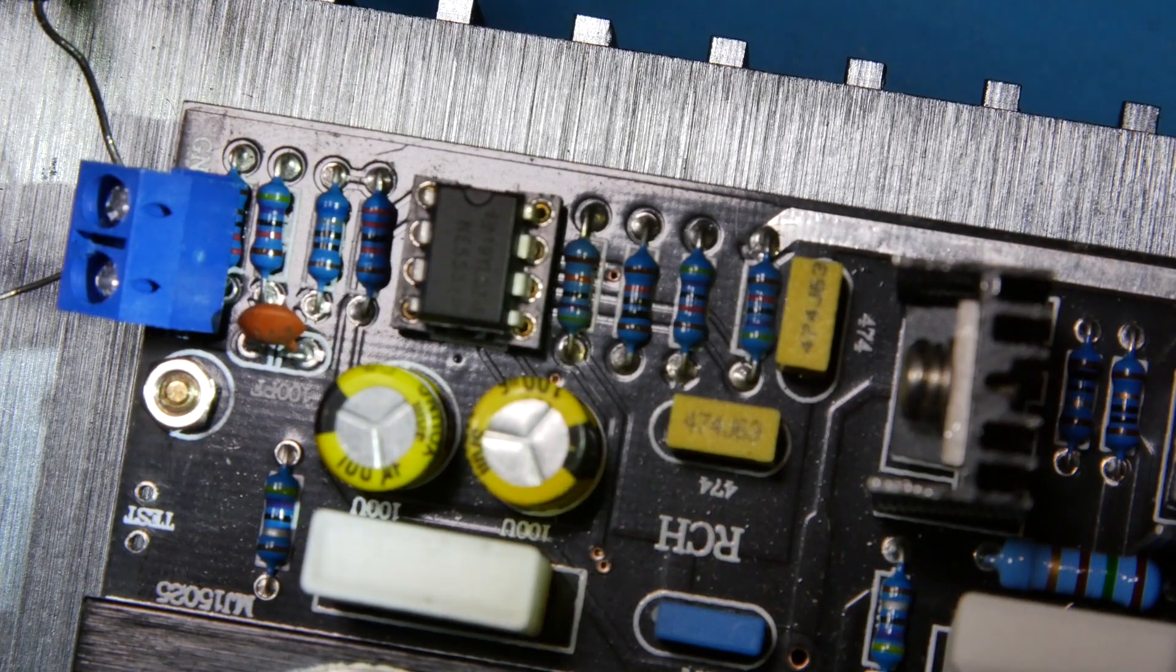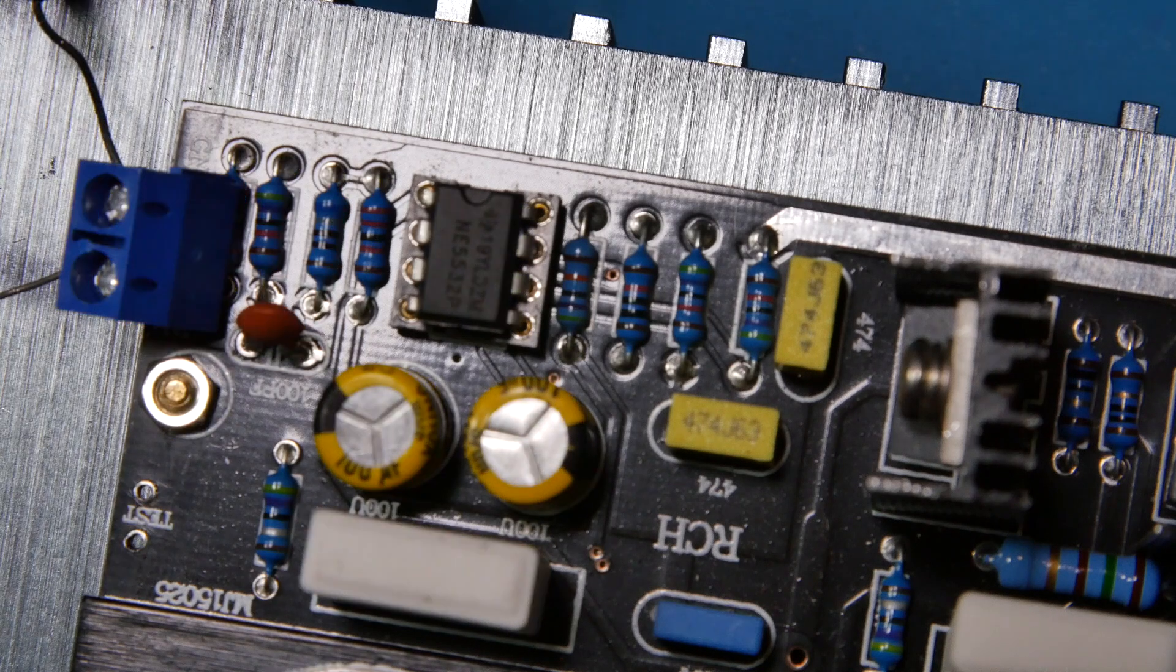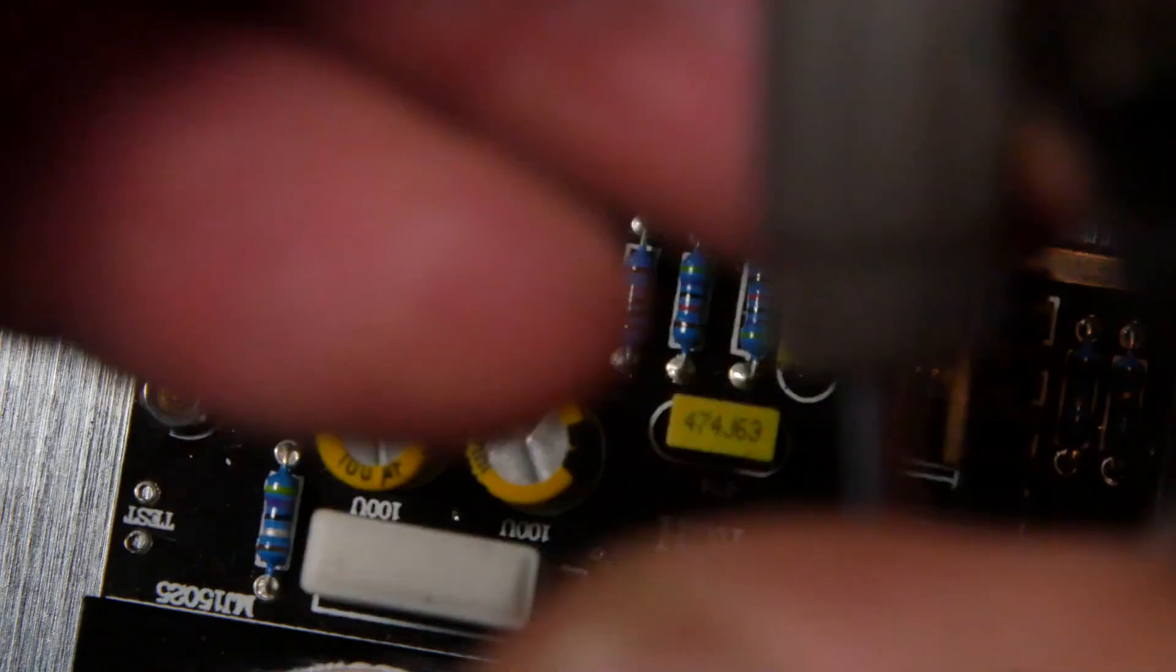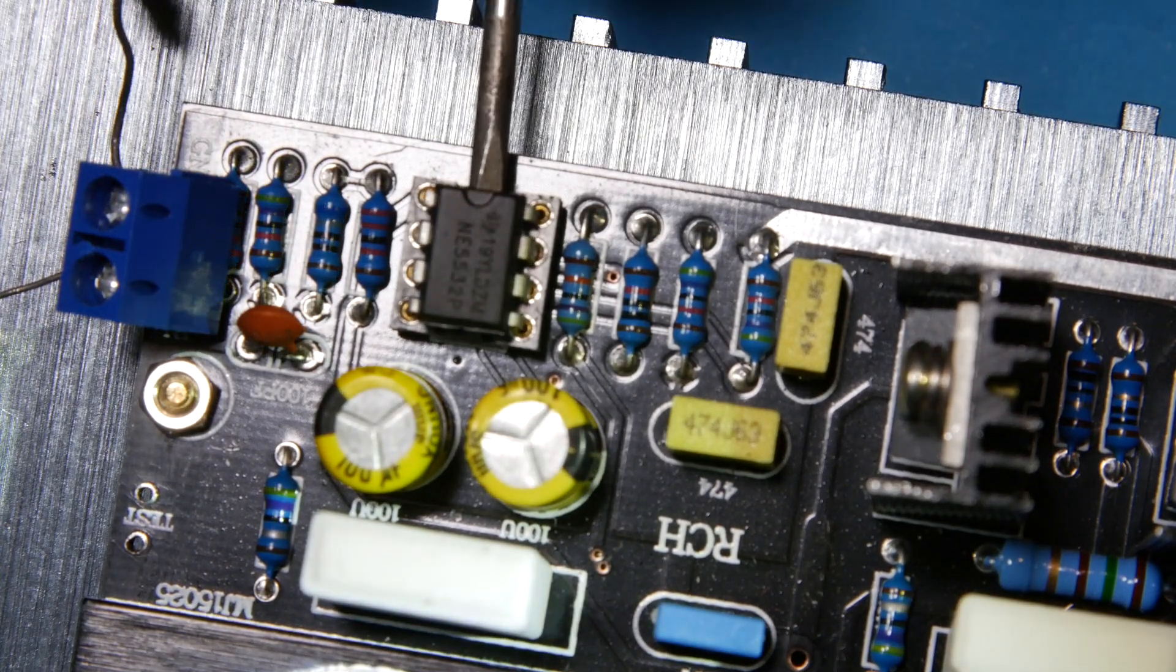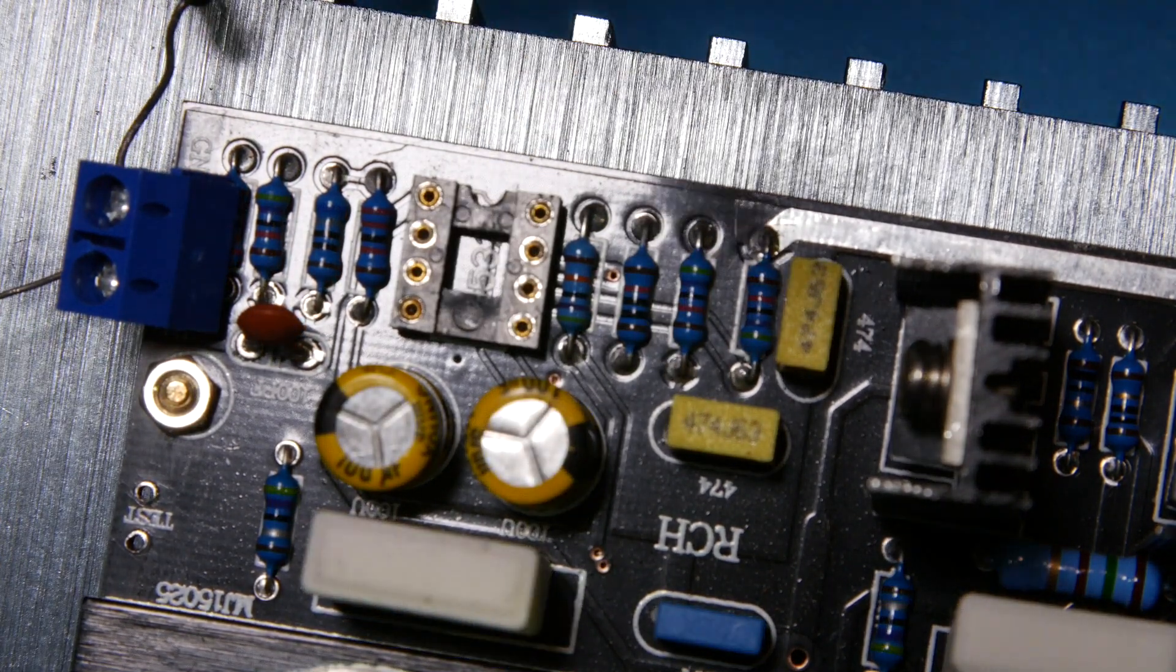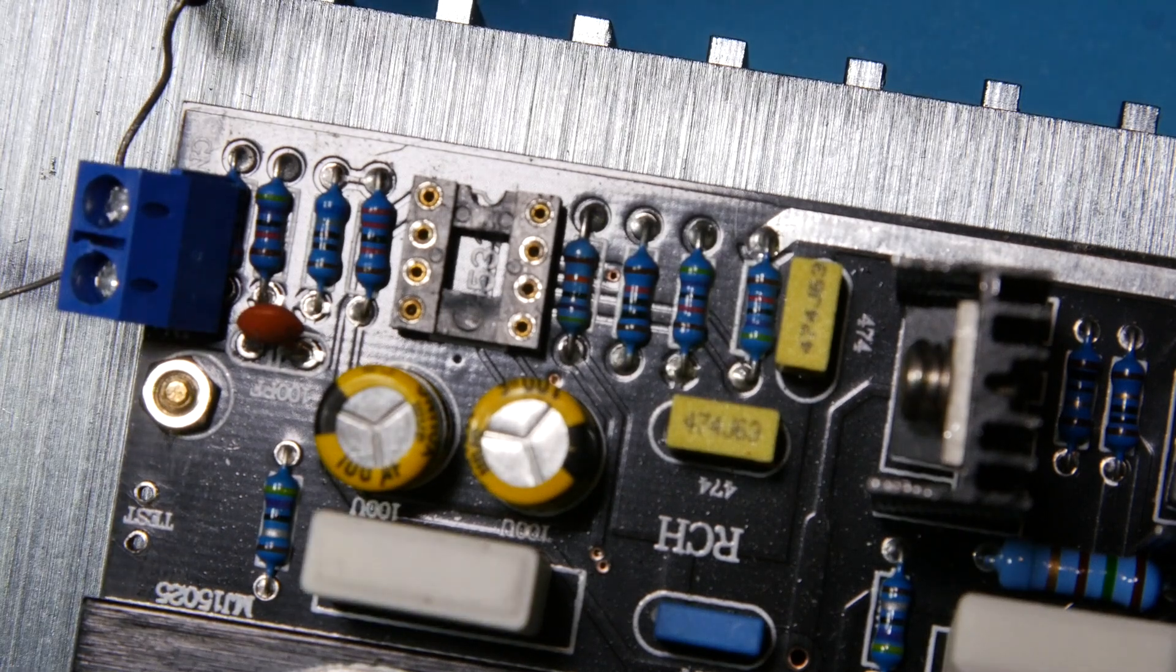All right. And, you can see the NE5532 in there. And, then, just popping that thing out carefully. Whoops. There we go. Magnetic screws are awesome.